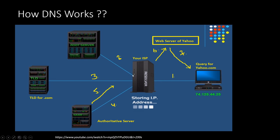There are 13 root servers available all over the world. The root server doesn't know about yahoo.com specifically, but it knows about top-level domains. It tells the ISP where the .com TLD server sits. The ISP queries the TLD, which knows the authoritative name server for yahoo.com. The authoritative name server knows the IP address of the Yahoo server and responds with it. The ISP then goes to the Yahoo web server, which responds directly to your browser and the yahoo.com web page opens. This is the simple flow of DNS.